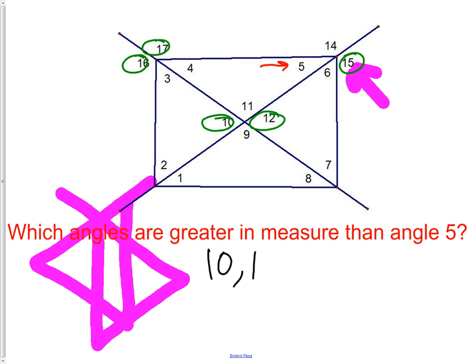So 10, 12, 15, 16, and 17 are all bigger than angle 5.